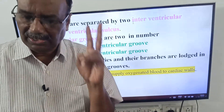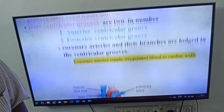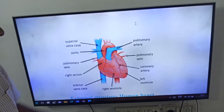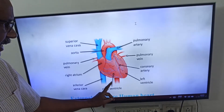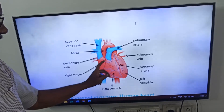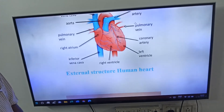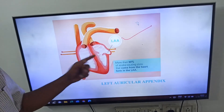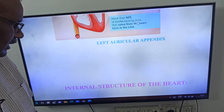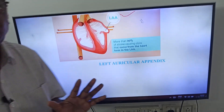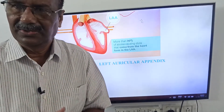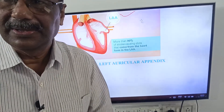Here you can see the structure of the human heart — left ventricle, right ventricle, right atrium, and left atrium. That is the left auricular appendix. That is about the external structure of the human heart — the second video of Human Heart. Thank you, good day friends.